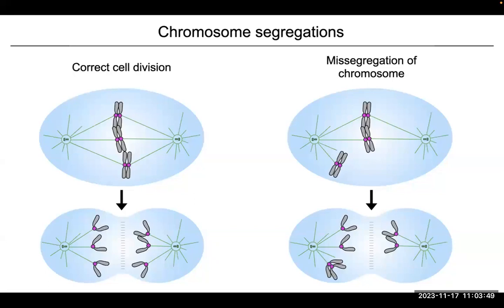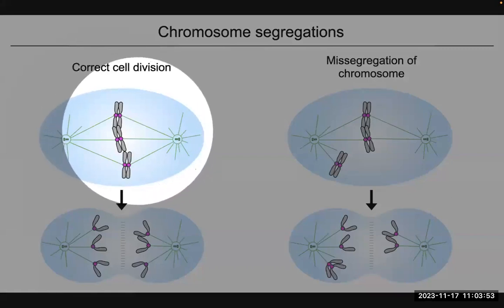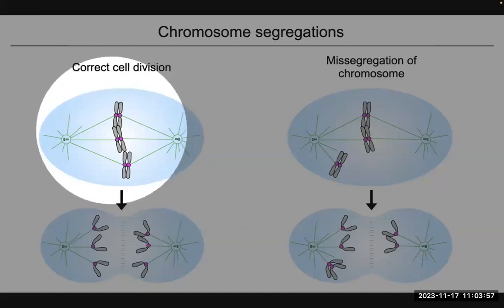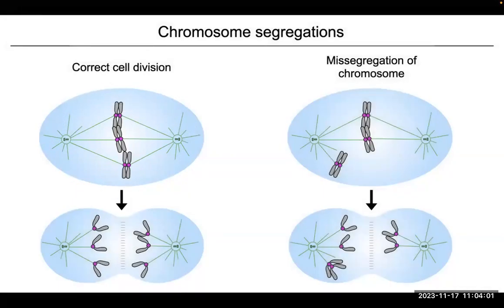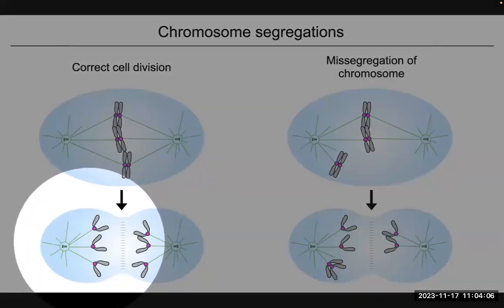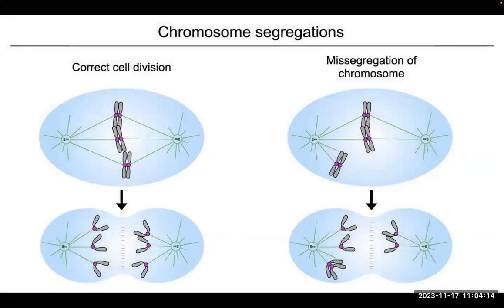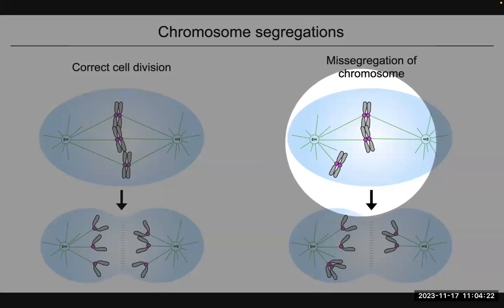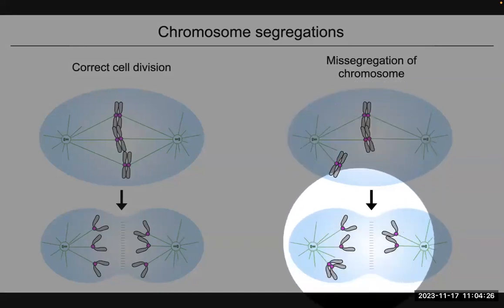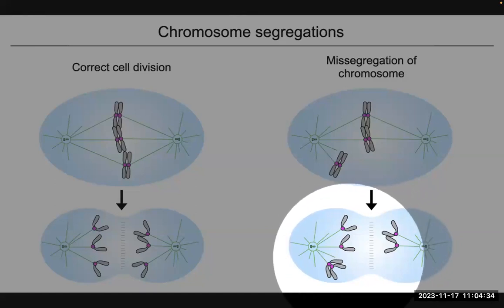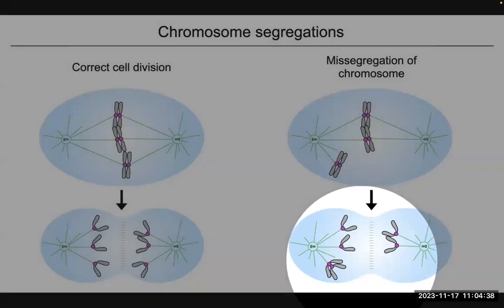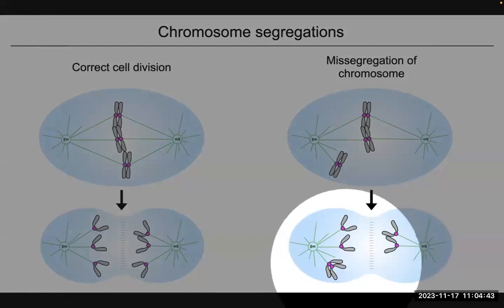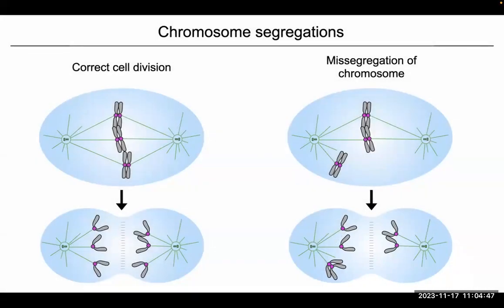This slide depicts two different cases. One case is what happens when healthy cells are dividing: they duplicate their chromosomes and divide the chromosome content such that each daughter cell gets the same chromosome content. However, in certain diseases such as tumors, there are incorrect cell divisions. These missegregations lead to unequal cell divisions, meaning daughter cells do not inherit the same chromosome content as the mother cell. In this particular case, one cell gains one chromosome and the other loses one.